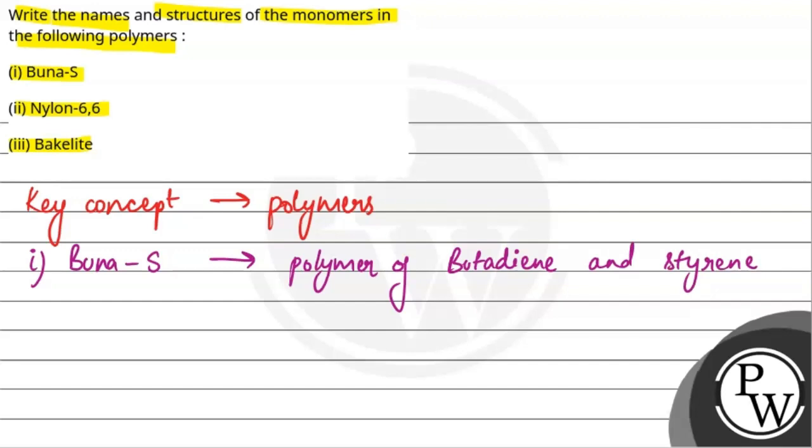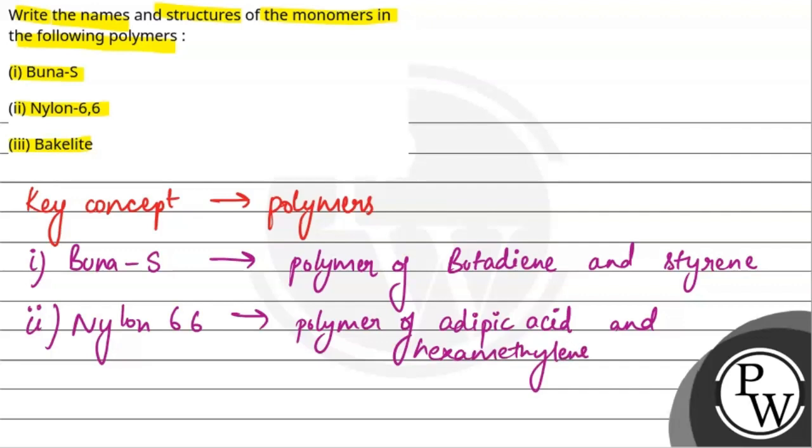So, we can draw these structures. First, we will see the names. Nylon-66 is a polymer of adipic acid and hexamethylene diamine. Now, let's see the next slide for polymer and monomer structures. And Bakelite is a polymer of phenol and formaldehyde.